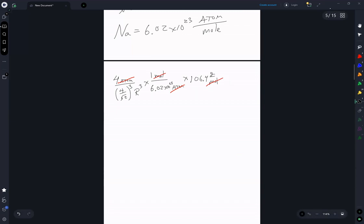And this gives us 3.124 times 10 to the minus 23 grams per r cubed.